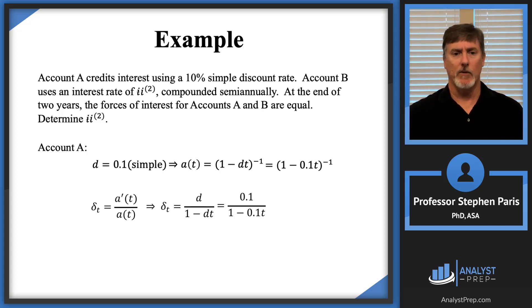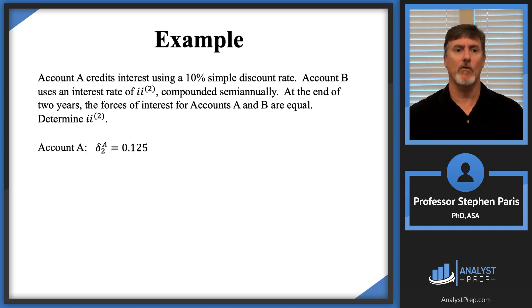And once again, I'm going to plug in a 2 for T. And I'm back to the same result that I had before, namely that for account A, the force of interest at time 2 is 0.125.